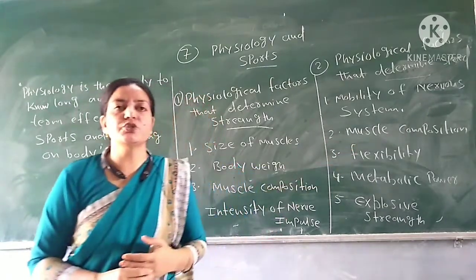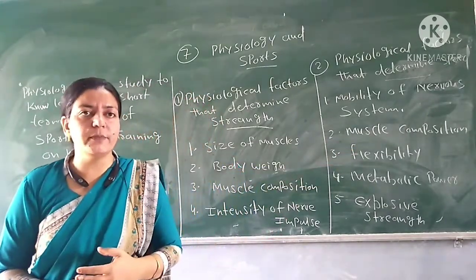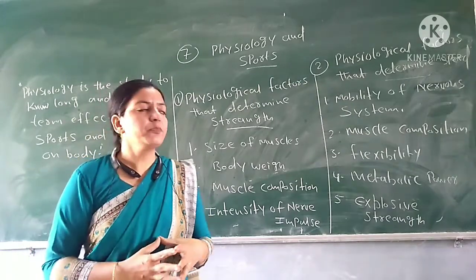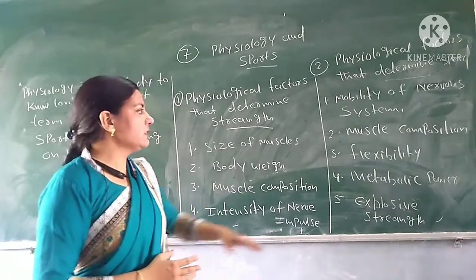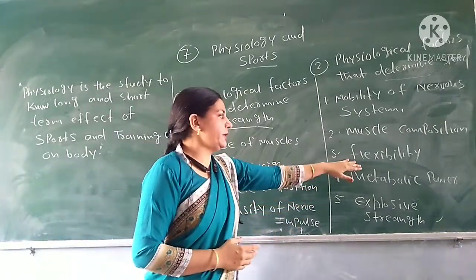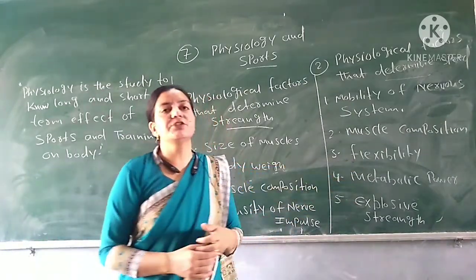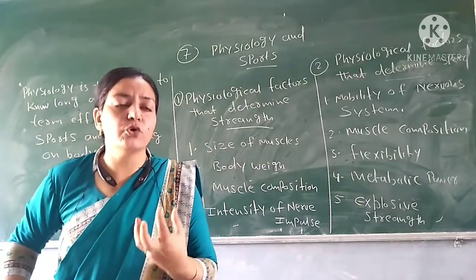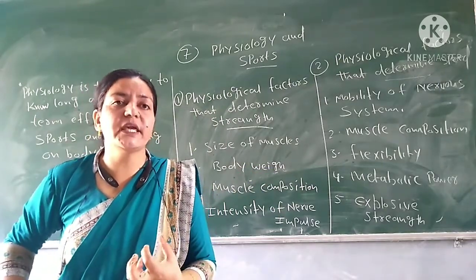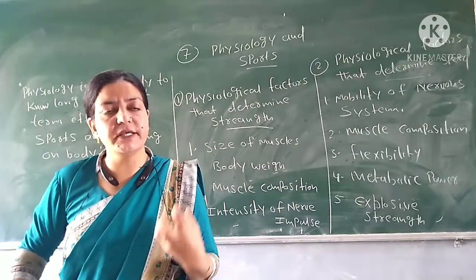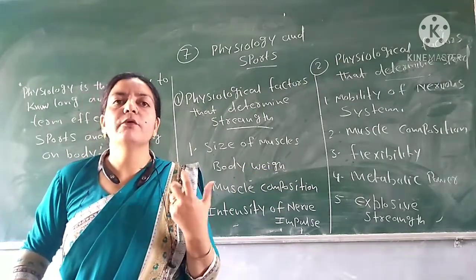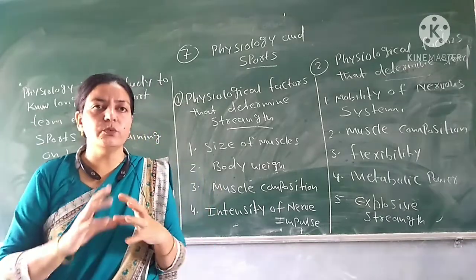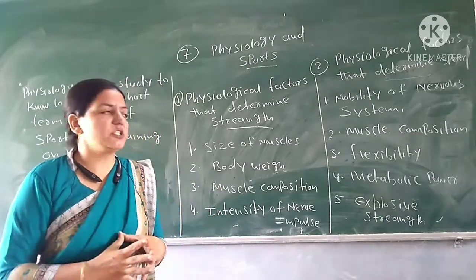The second factor for speed is muscle composition — fast twitch and slow twitch fibers determine our speed. The third factor is flexibility. If your muscles are flexible, you will be able to exert force and speed more effectively, so flexibility leads to better speed.